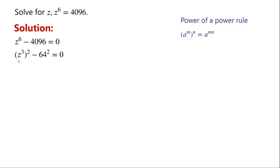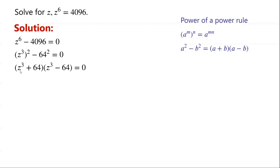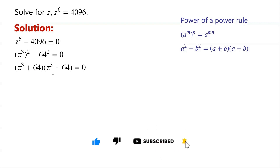This is a difference of two squares. We know that a squared minus b squared can be written as (a plus b) times (a minus b). By applying this, we can now write (z cubed plus 64) times (z cubed minus 64) equals 0.